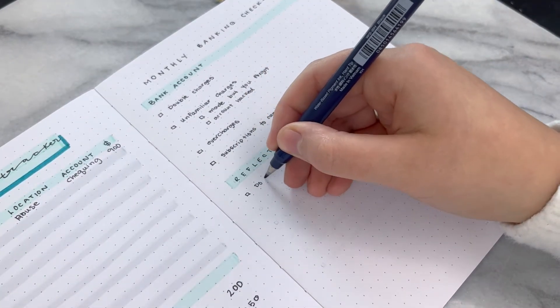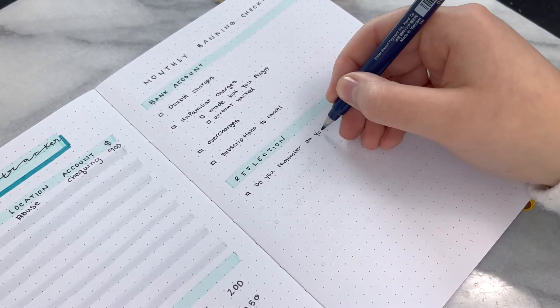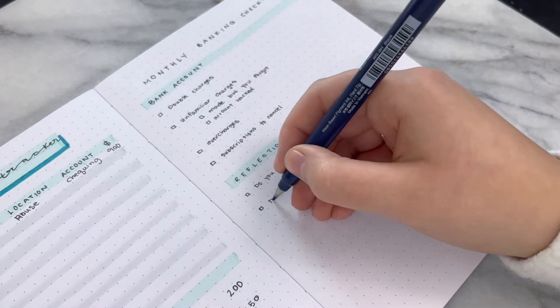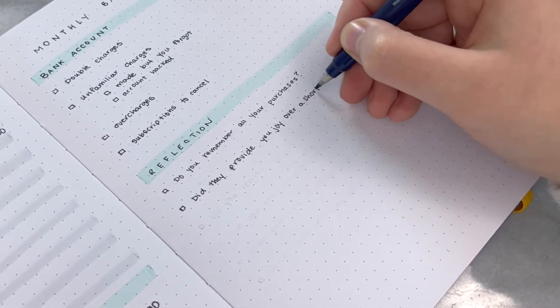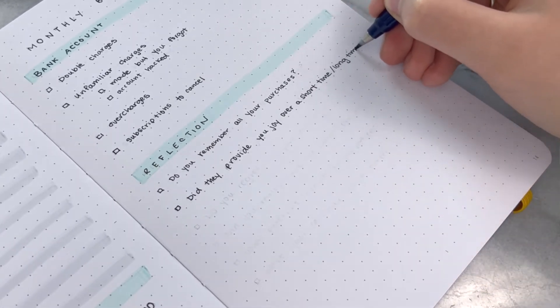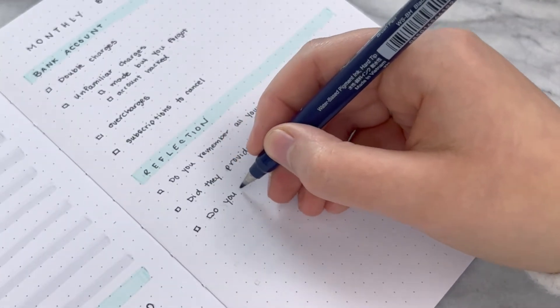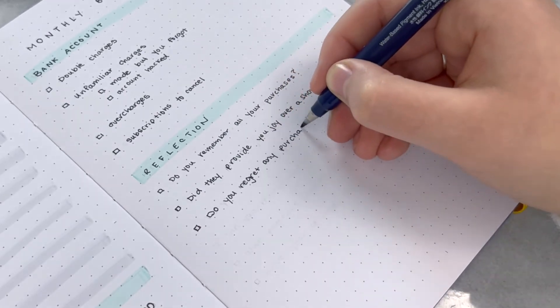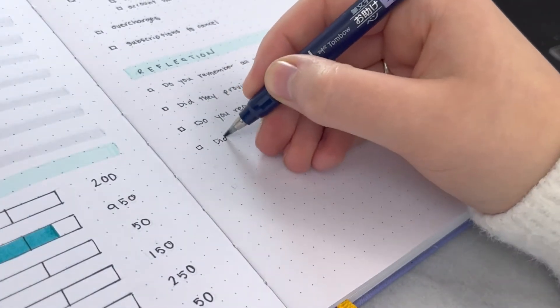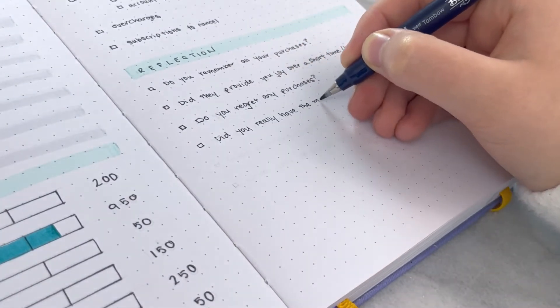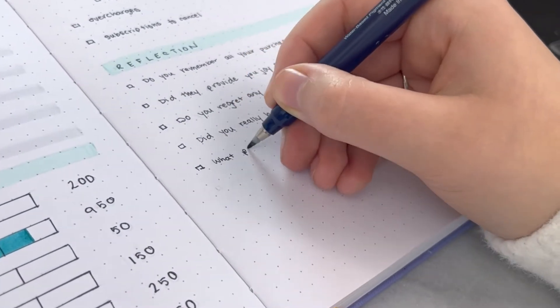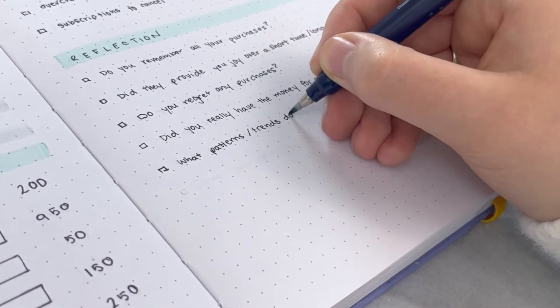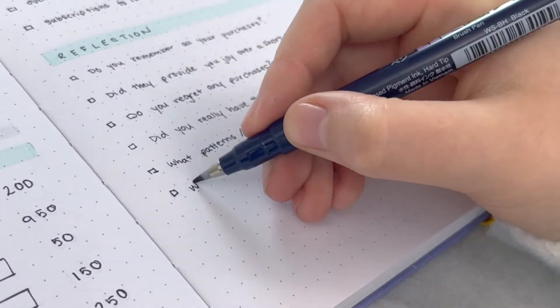With the reflection questions as well, you can do these out loud, write them down, just simply in your head, but it gives you a good little base point to your money awareness. Do you remember all of your purchases? Did they provide you joy over the short term or the long term? Do you regret any of these purchases? What patterns or trends did you notice? And was your budget categories correct?